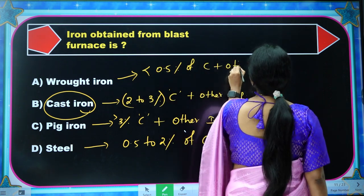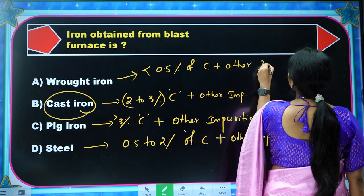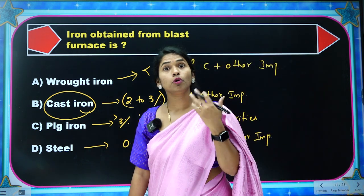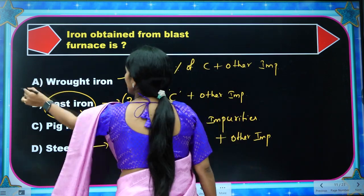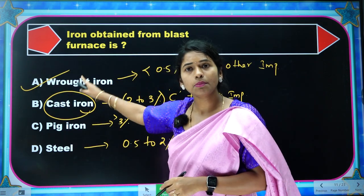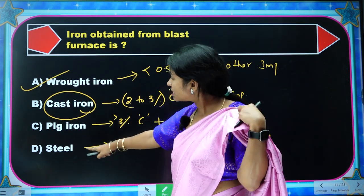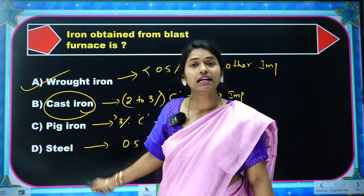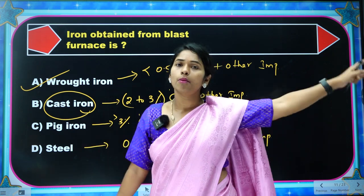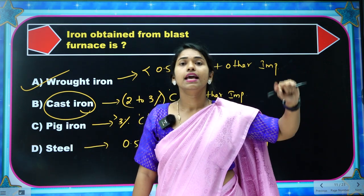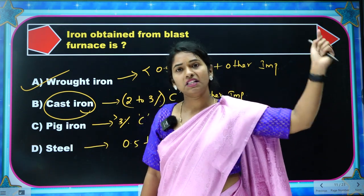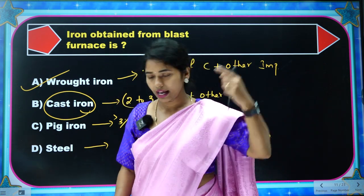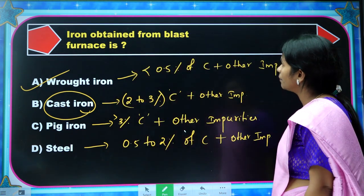That iron with less than 0.5% carbon plus other impurities is wrought iron — the purest form of iron. Which is the most impure form? Pig iron. Pig iron is formed in the blast furnace. We then use the Bessemer process for purification — I will teach that another day.